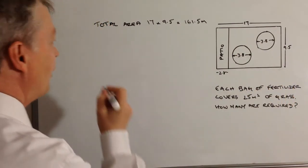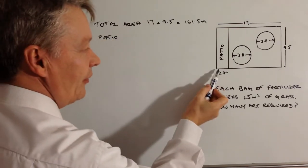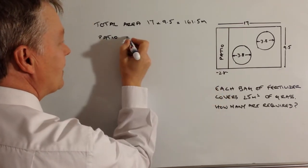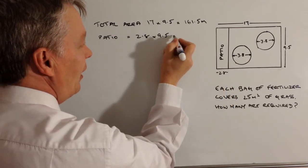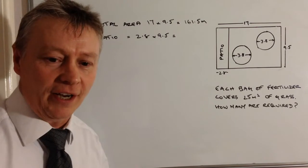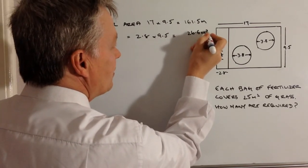The next little bit is the area of the patio. Okay, so the patio itself is a width of 2.8 and it has a depth of 9.5. So the total area of the patio is going to be 26.6 metres squared.